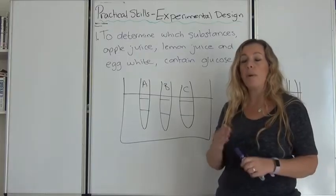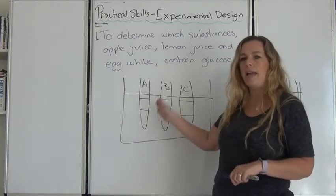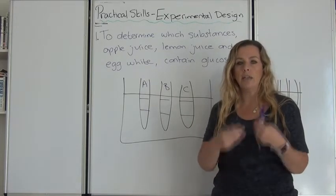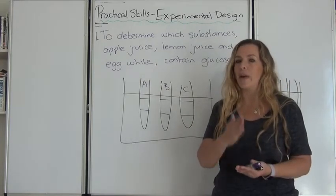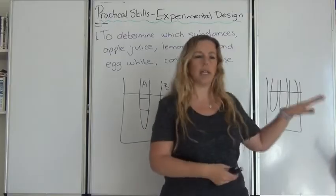Then you say, remember you've got to remember your control variables. Add 10 ml of apple juice to A, lemon juice to B and albumin to C using a 10 ml syringe. Always say what your apparatus is. And then you can continue.